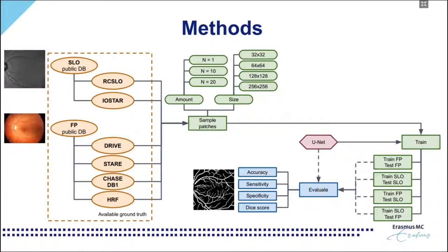To that end, six public databases with manual annotations were used — two SLO and four fundus photography. A U-Net was used as the base model, and we studied how the number of patches per image and their size affected the result. The model was trained using all available datasets from one modality and tested using all datasets from the other. To evaluate, accuracy, sensitivity, specificity, and DICE score were used, as these are the measures reported by previous authors in the literature.